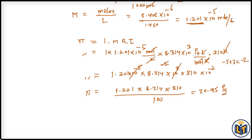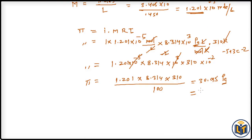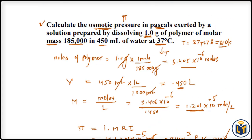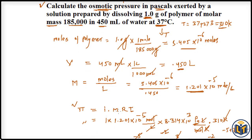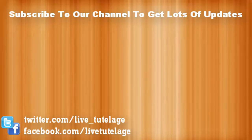Rounding to two significant figures (matching the given data), the osmotic pressure is 31 Pascals. This is how we calculate the osmotic pressure exerted by a solution using the formula π = i·M·R·T. If you found this video helpful, please like, comment, and subscribe to our channel for more IIT JEE and NEET updates.